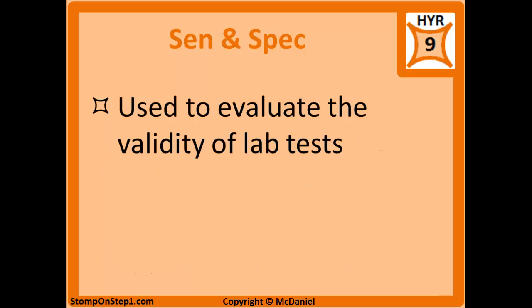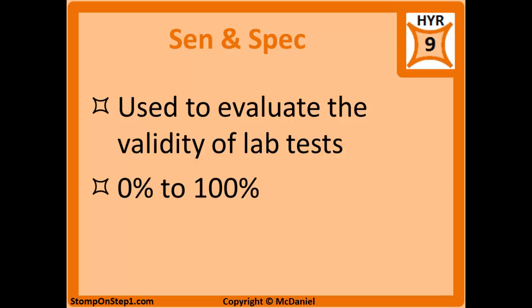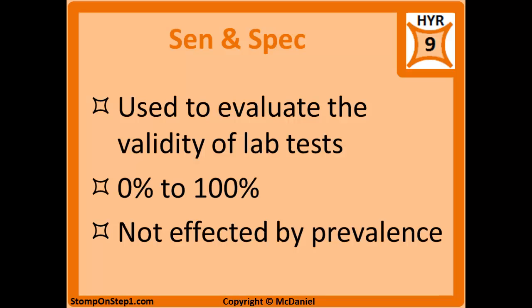You need to understand when to use sensitivity and specificity because it differentiates them from positive predictive value and negative predictive value. Sensitivity and specificity are used to determine the validity of a lab test — for example, comparing a newly developed test to an old one, or deciding between two different tests. We're not talking about results for an individual patient; this is before you have individual results, so it's a percentage ranging from 0 to 100. It's also important to note that sensitivity and specificity are not affected by prevalence.